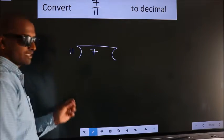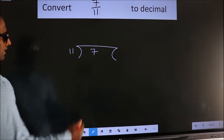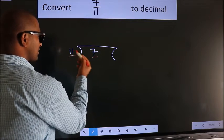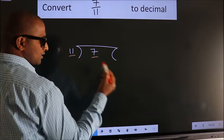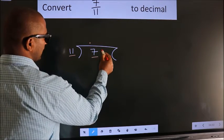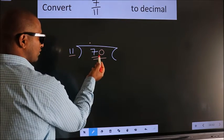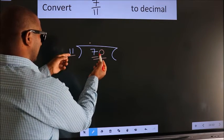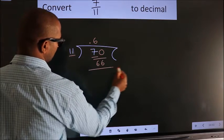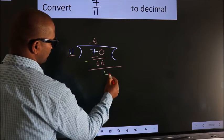This is your step 1. Next, here we have 7. Here 11. 7 is smaller than 11. So what we do is, we should put dot, take 0. So 70. A number close to 70 in 11 table is 11 sixes, 66. Now we should subtract. We get 4.